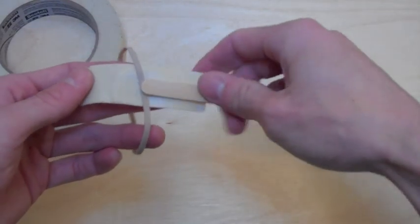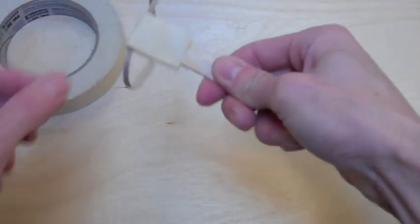Lay the craft stick onto the tape so that the tip touches the rubber band. Fold the tape over, and you're done!